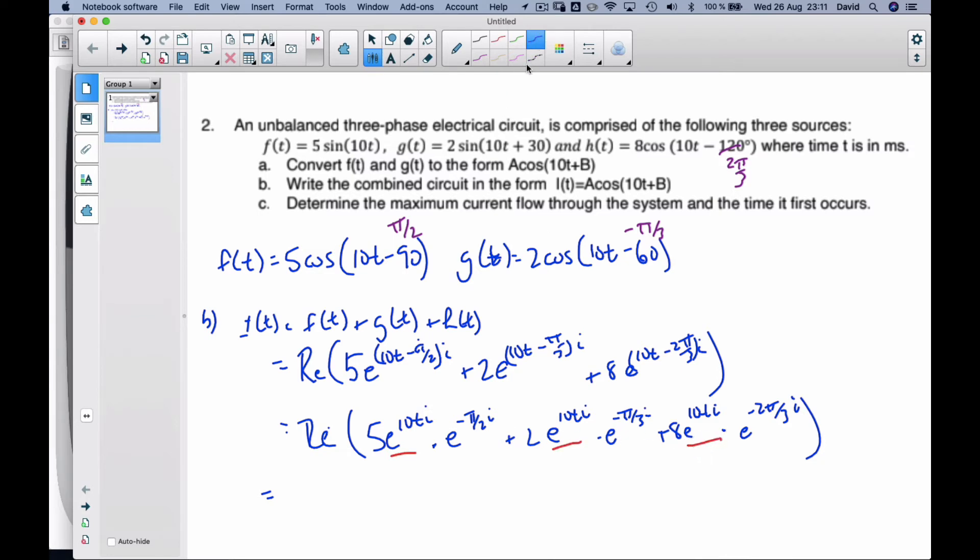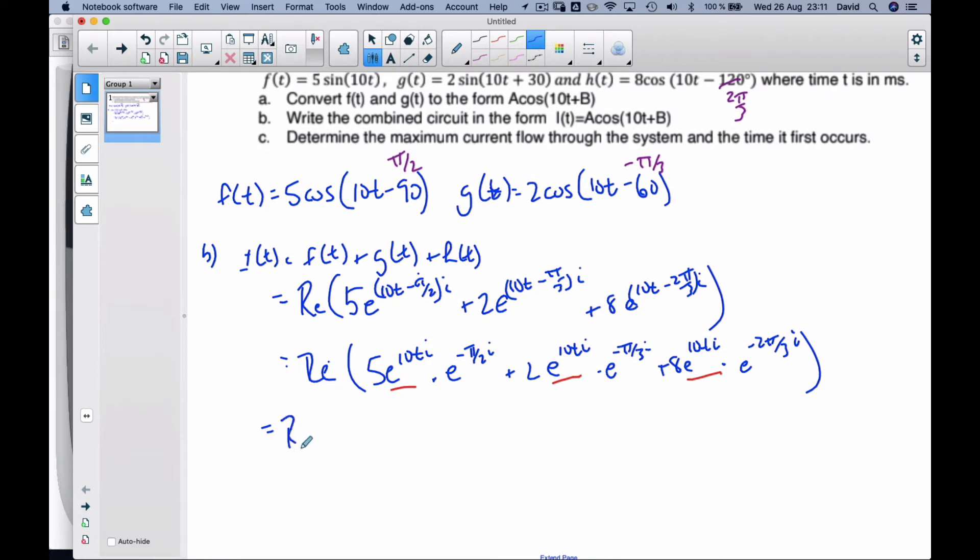I have e^(10ti) in all of them. I'm going to pull it out as a common factor. So I have the real value of e^(10ti) times [5e^(-π/2i) + 2e^(-π/3i) + 8e^(-2π/3i)].